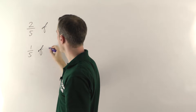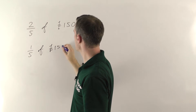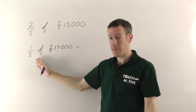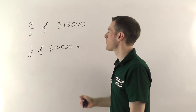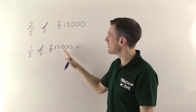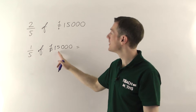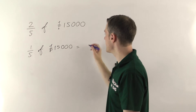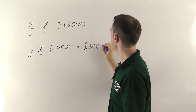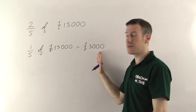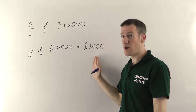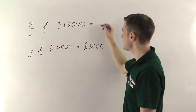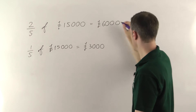Now 1 fifth of 15,000 is 15,000 divided by 5. If you're finding a fifth of something, you just divide by 5. Well, 15 divided by 5 gives you 3, so 15,000 divided by 5 will be 3,000. So a fifth of 15,000 is 3,000. And if we know what 1 fifth is, finding 2 fifths is just going to be twice as much. So 2 fifths of 15,000 is 2 times 3,000, which is 6,000.